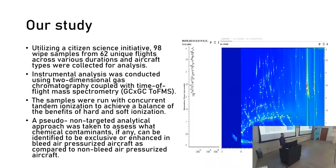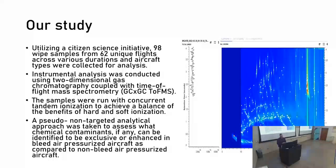We got a bunch of people together and they collected samples from 62 unique aircraft. For instrumental analysis, we used GC×GC time-of-flight mass spectrometry, done in concurrent tandem ionization mode. We really wanted the higher peak resolution — to see more compounds than what would potentially be visible in a standard GC-MS sample.